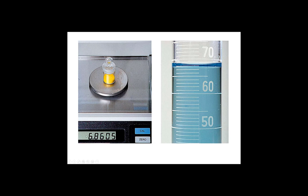When reading an electronic device like a digital balance, there are still certain and uncertain digits. The electronics take care of the estimation for you — the last decimal place displayed is still the uncertain digit. For example, in a reading of 686.05, the 6, 8, 6, and 0 are certain, while the final 5 is uncertain — it might really be a 3 or 4, typically plus or minus one or two digits, as indicated on the machine.